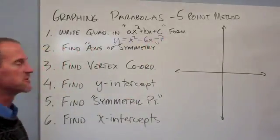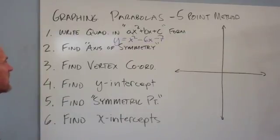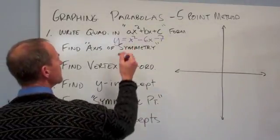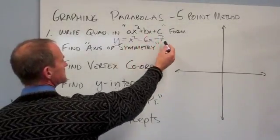Okay, I don't have much room, I want you to be able to see everything all at once, so I'm squeezing it in there. Pay attention to what's the a, the b, and the c. So a is an invisible one, b is a negative 6, and c is a negative 7.